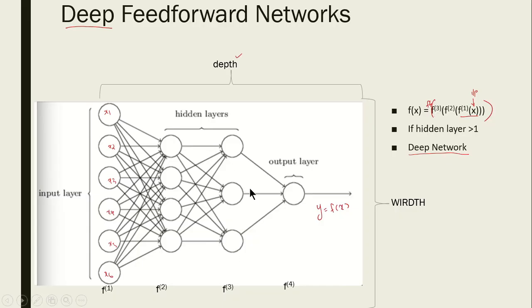This network can be called a deep neural network since it has two hidden layers — hidden layer 1 and hidden layer 2.